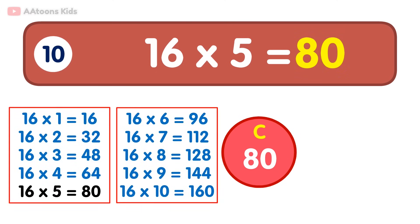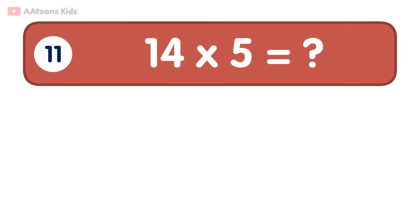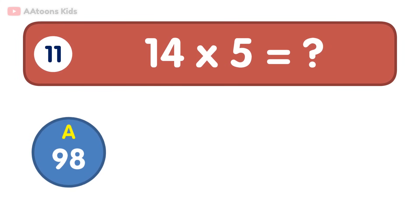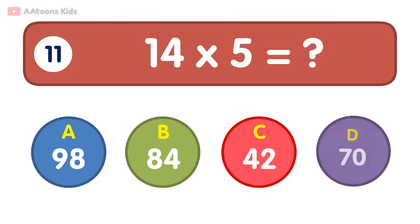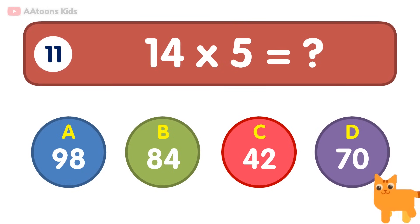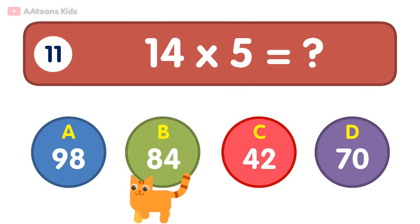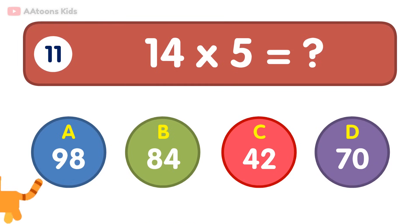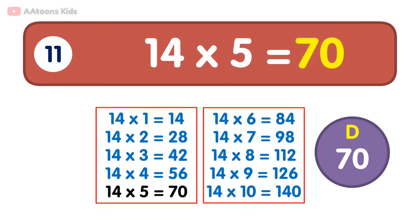38. 19 times 2 is 38. 14 times 5 is equal to 70. 14 times 5 is 70.